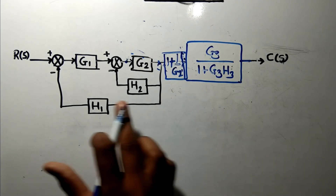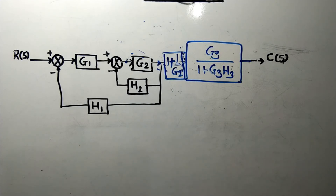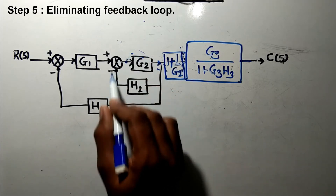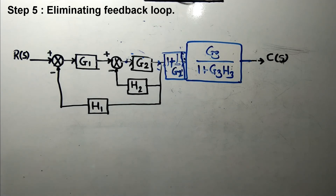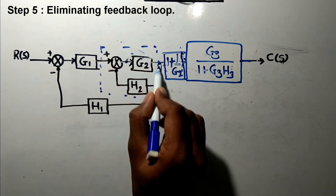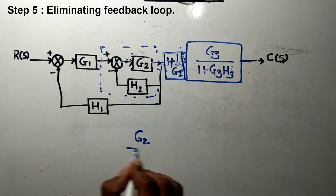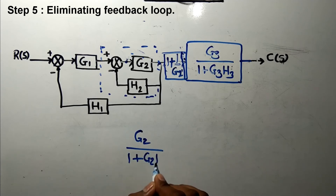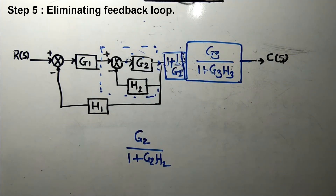G2 and H2 are connected in a feedback loop, so the better approach is to eliminate this feedback loop next. Negative feedback is present, so the formula gives G2 divided by (1 + G2·H2). We apply this formula and convert this feedback loop into a single block in our next step.